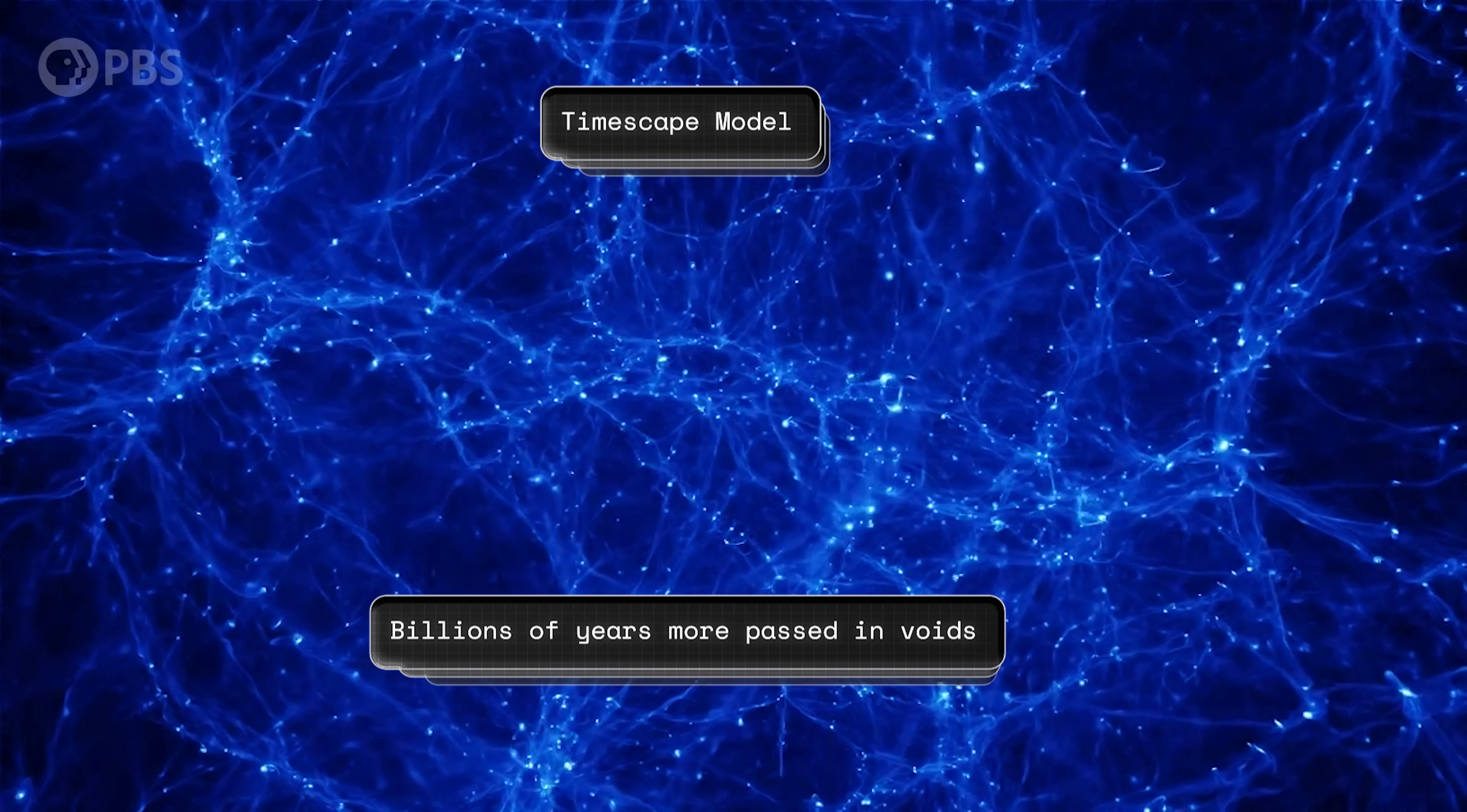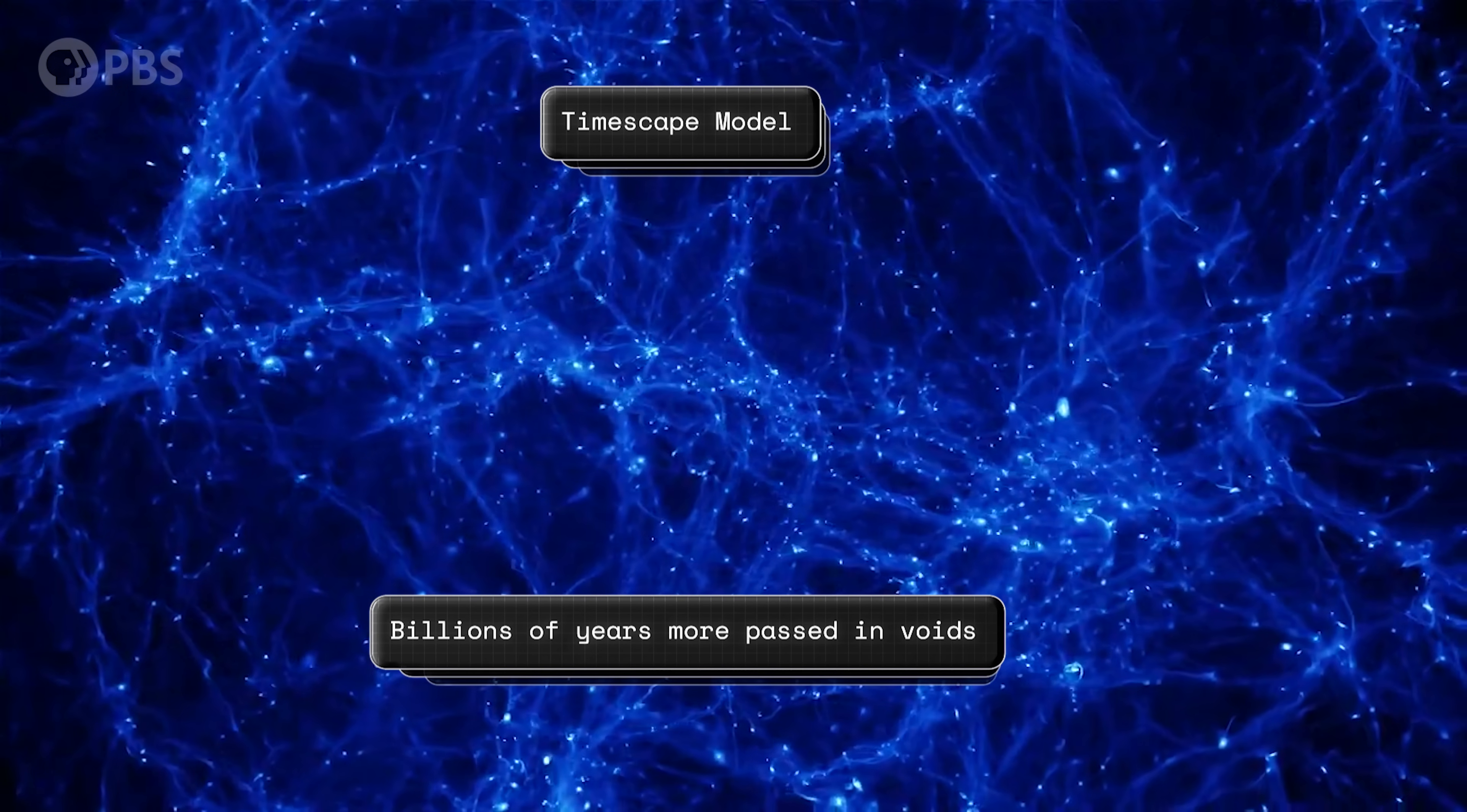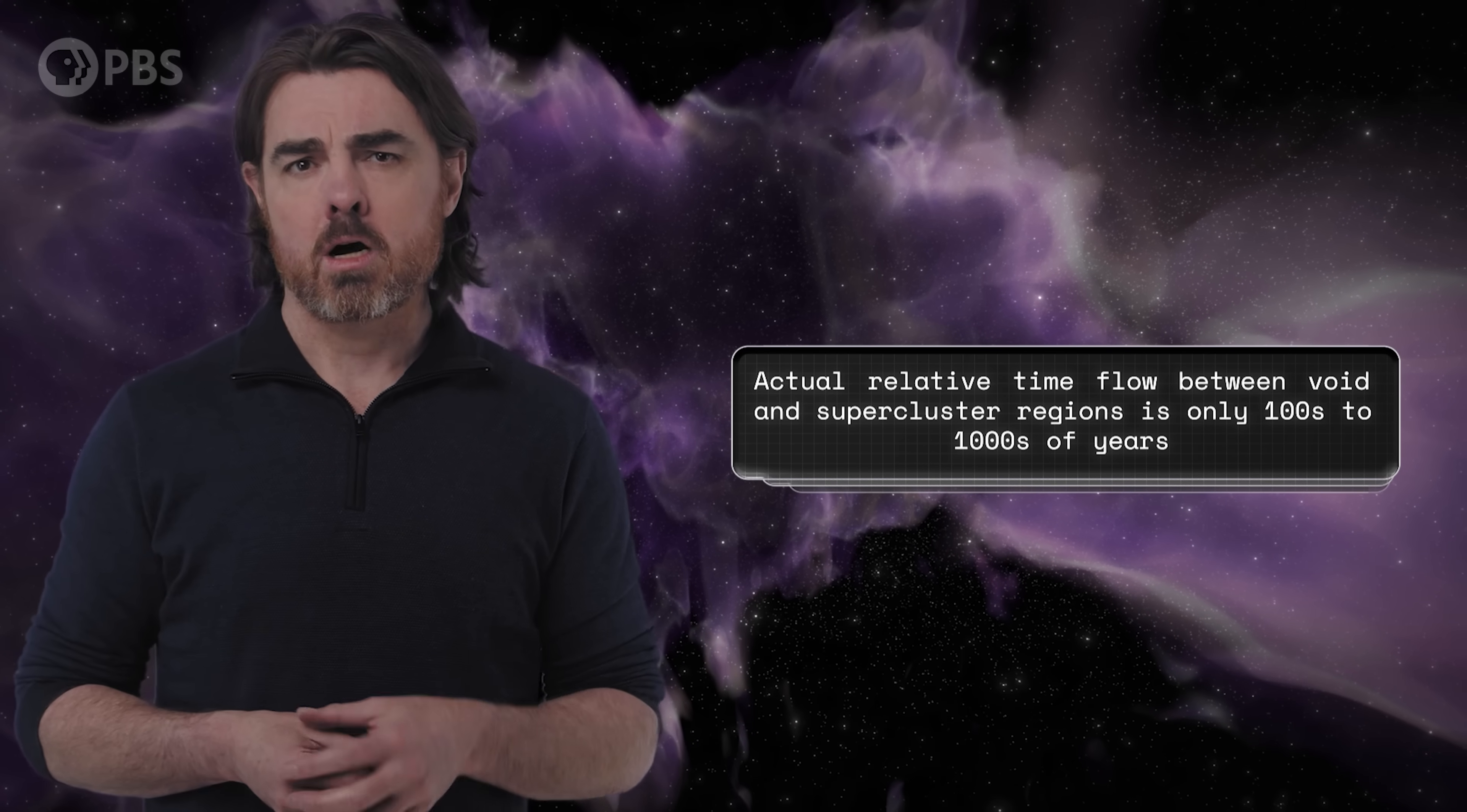Another main issue with the timescape model is that it requires large differences in time flow between the cosmic voids and the dense regions of the universe. Large enough that billions of years more would have passed in the voids compared to the superclusters. Such large differences are not the consensus. For example, Ethan Siegel points out that the relative flow of time between these regions should result in an age differential of only hundreds to thousands of years, which isn't anywhere near enough to produce the effect that timescape claims. I should also point out that the researchers themselves admit that more work needs to be done. For example, supernova distances are not at all easy to figure out and require many steps of calibration. The timescape team acknowledges that some of this requires further work. So yeah, dark energy didn't go away.